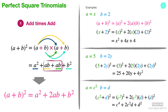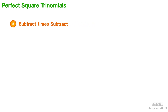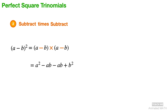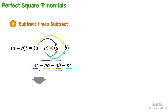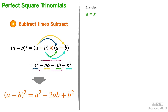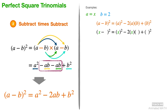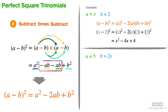The next pattern is perfect square trinomial subtract times subtract. The square of a minus b is equal to a minus b times a minus b. Apply the distributive property when multiplying the binomials. Combine the ab terms and you'll have a squared minus 2ab plus b squared. Let's substitute x for all a's and substitute 2 for all b's. The expanded form is equal to x squared minus 4x plus 4. And here are a few more examples.